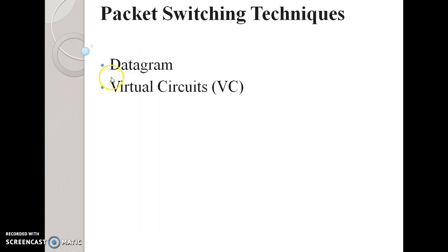Next is packet switching techniques. There are basically two packet switching techniques available. First, datagram. Second, virtual circuits. Some basics: in packet switching, the station breaks longer messages into packets, and all packets are sent at a time into the network. Packets are handled in two ways: datagram and virtual circuits.